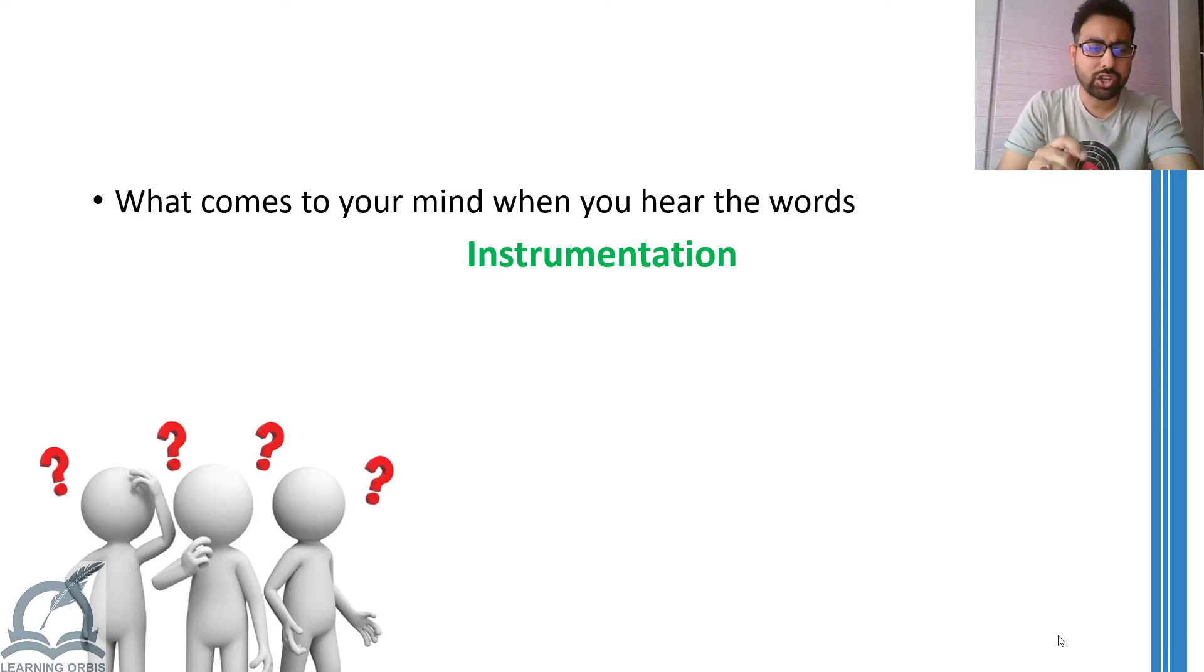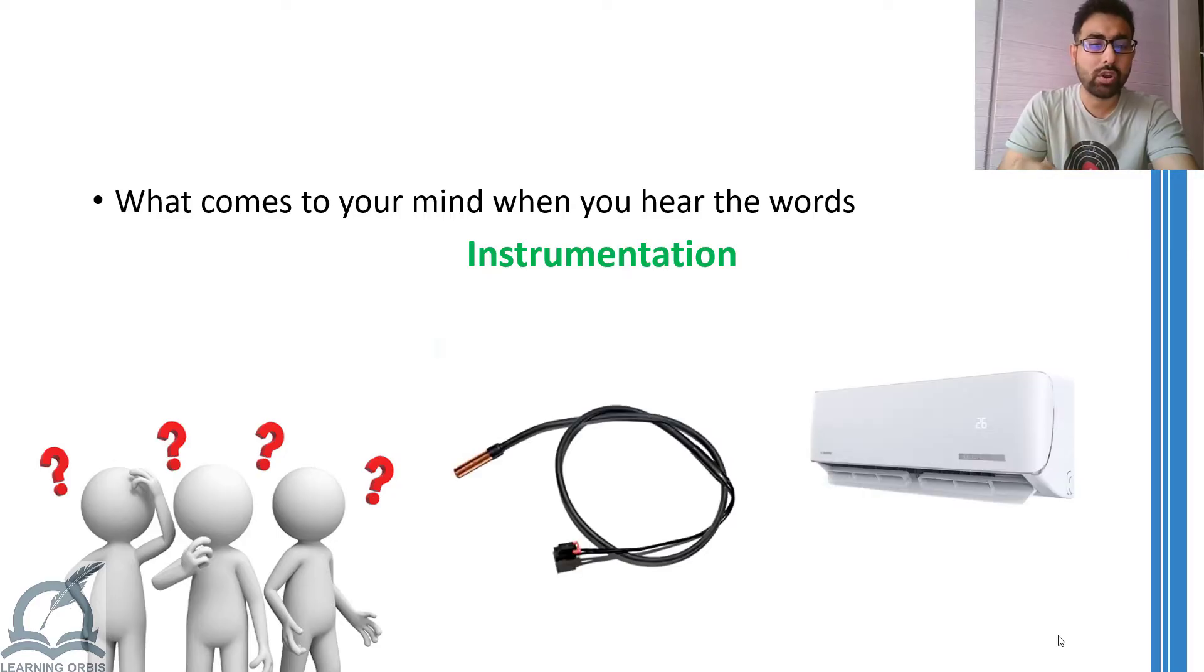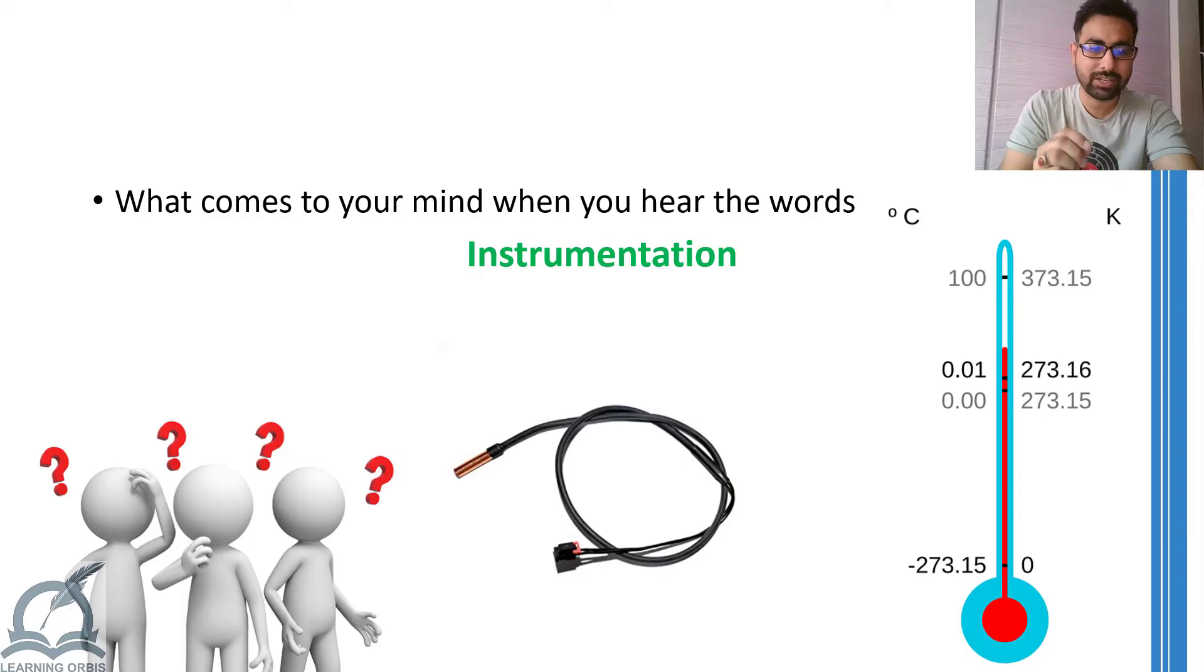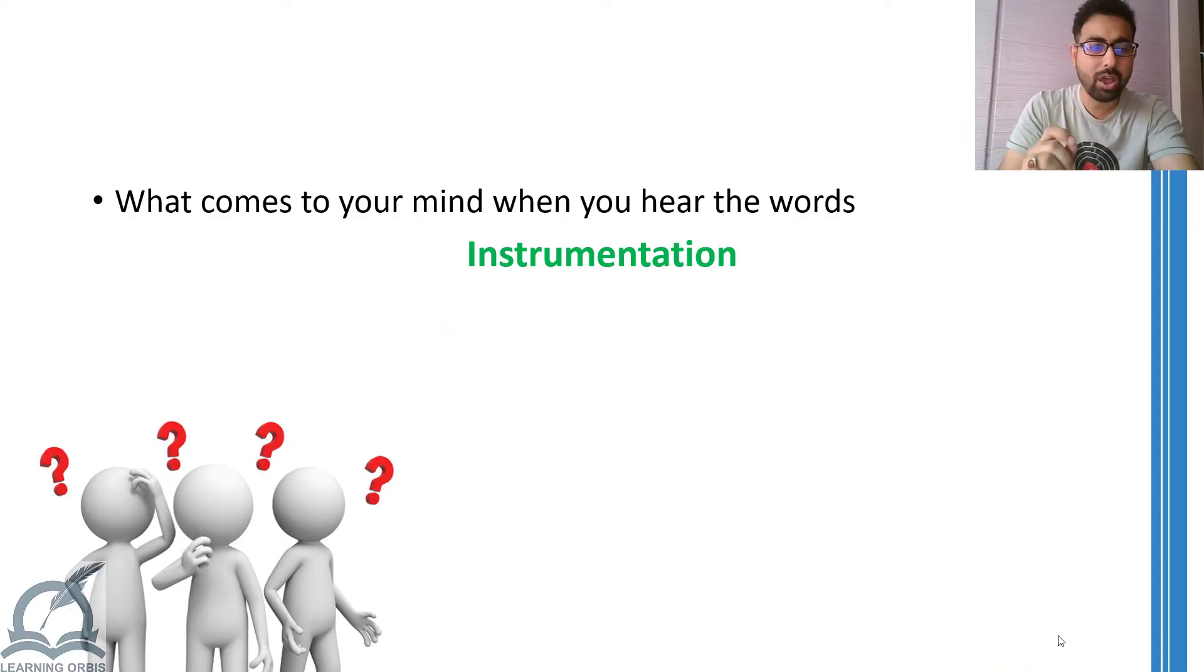An example of instrumentation can be as simple as a temperature sensor installed in the air conditioner at your home. This sensor is used to measure the current temperature of the air present in your room. We can say that we have done instrumentation to measure the temperature of the air. So, I hope now you have at least a basic idea what instrumentation is.